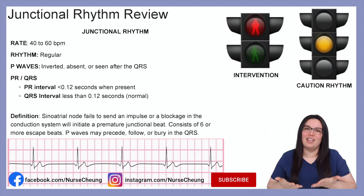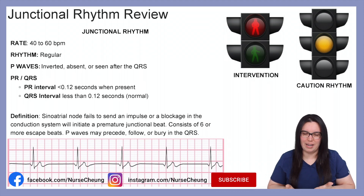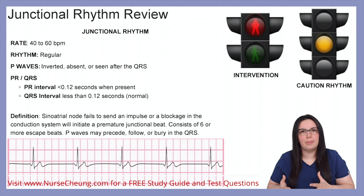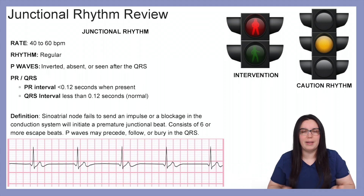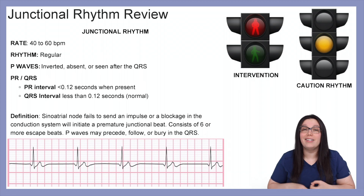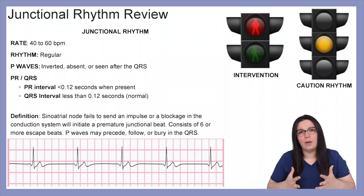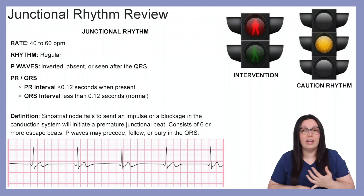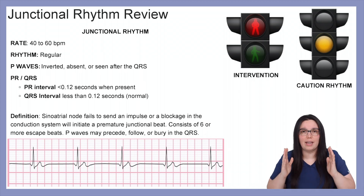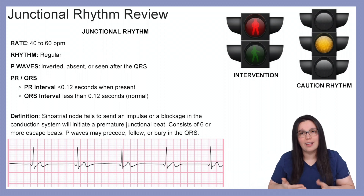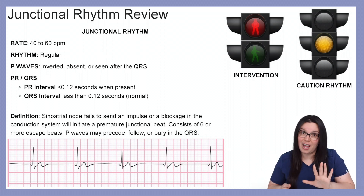Before we begin, I want you to take a look up here on the right side of your screen. You're going to see two different sets of stoplights. Our first set of stoplights is going to tell us about our rhythm — is it a good rhythm, is it a rhythm we should be cautious about, or is it a lethal rhythm? Our next one is going to be either a green person letting us know that we can play our monopoly game, collect our $200 and keep going, or it needs to be red — stop, we need to do something about this before it gets worse.